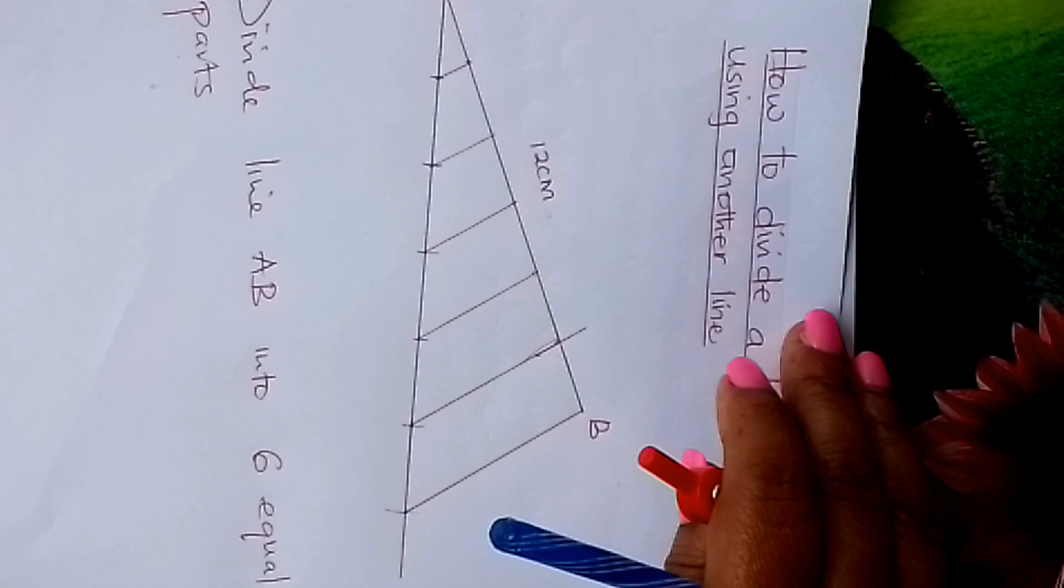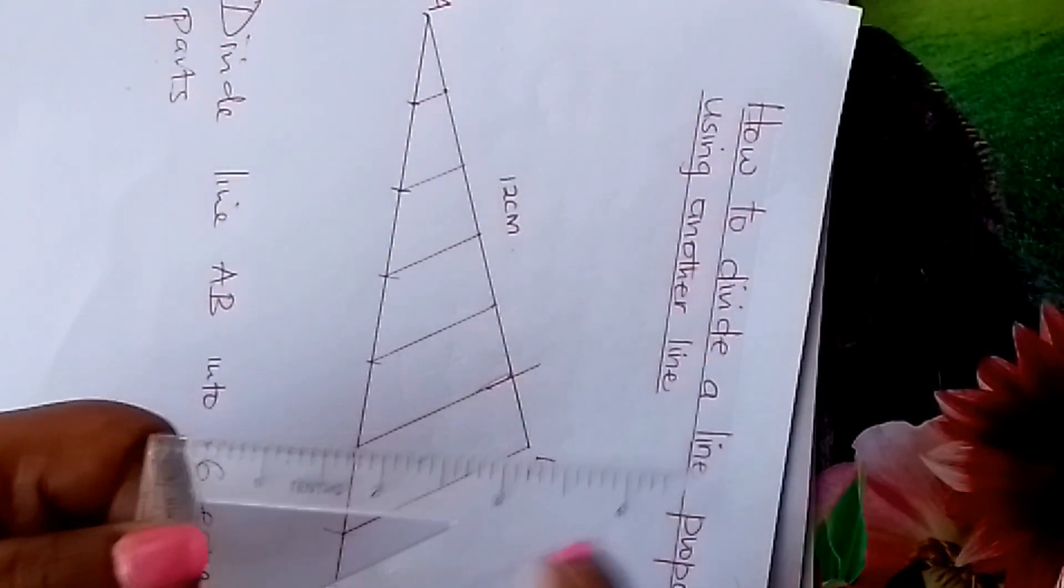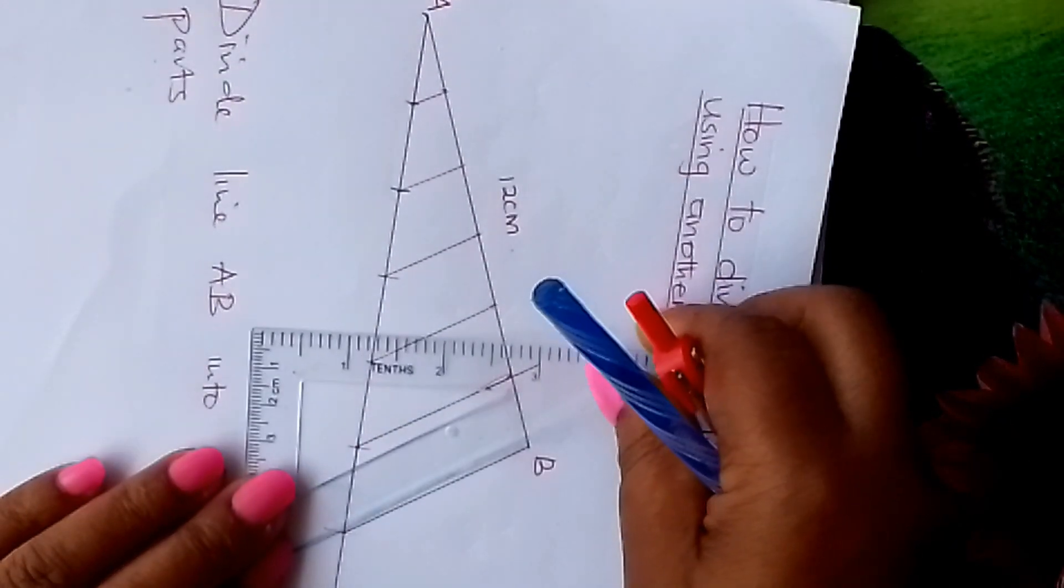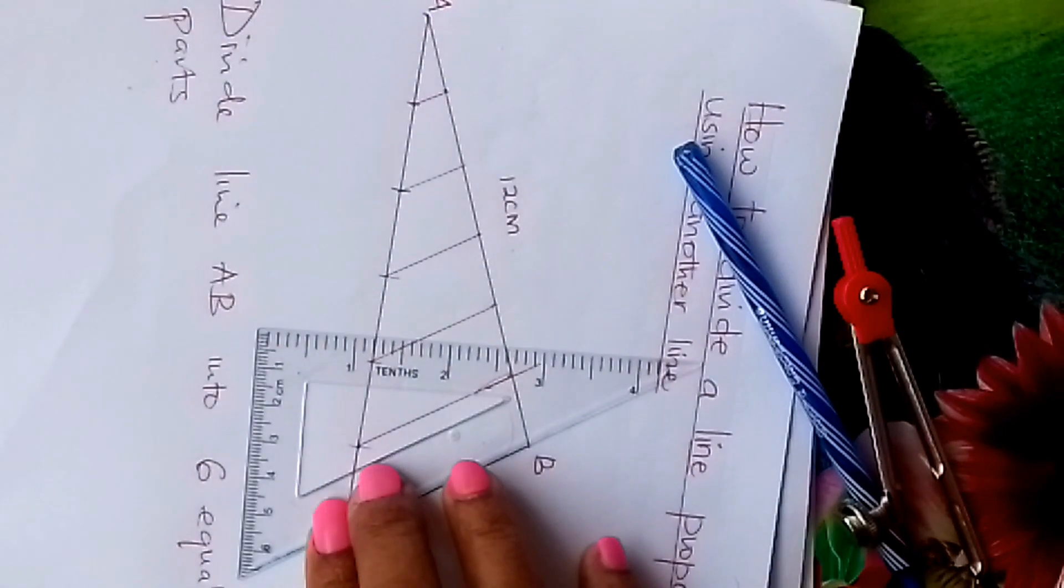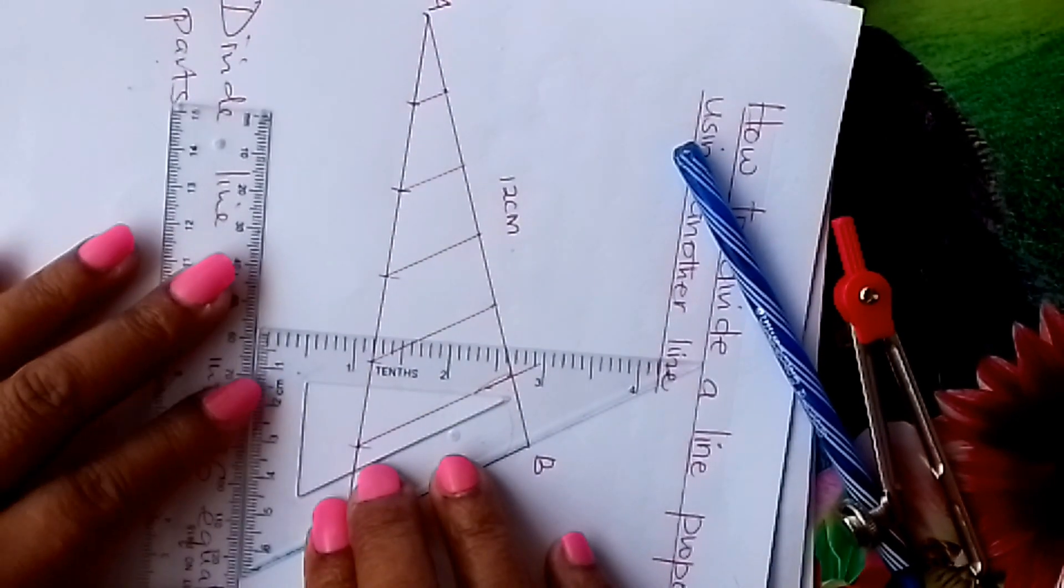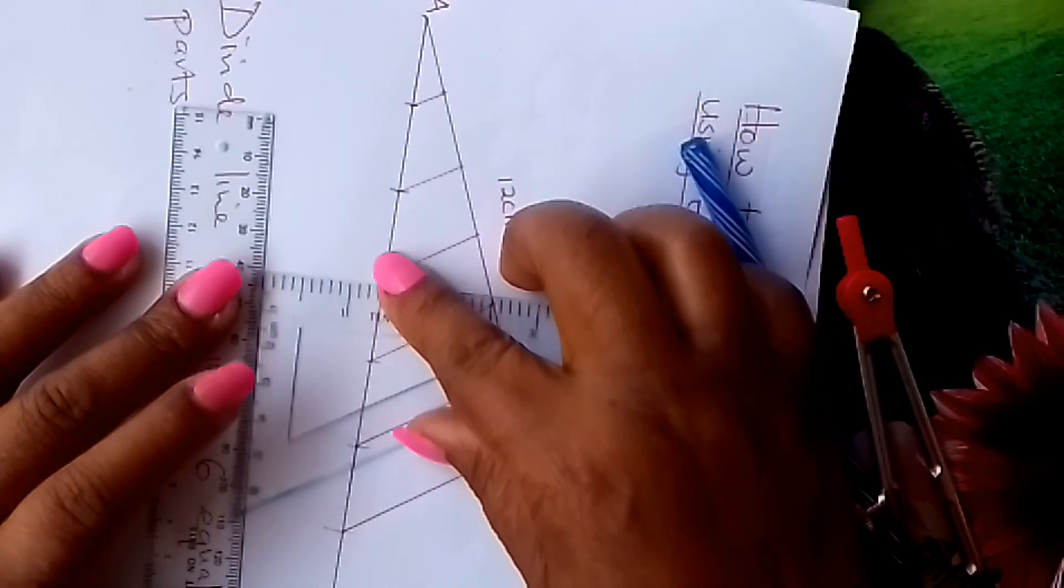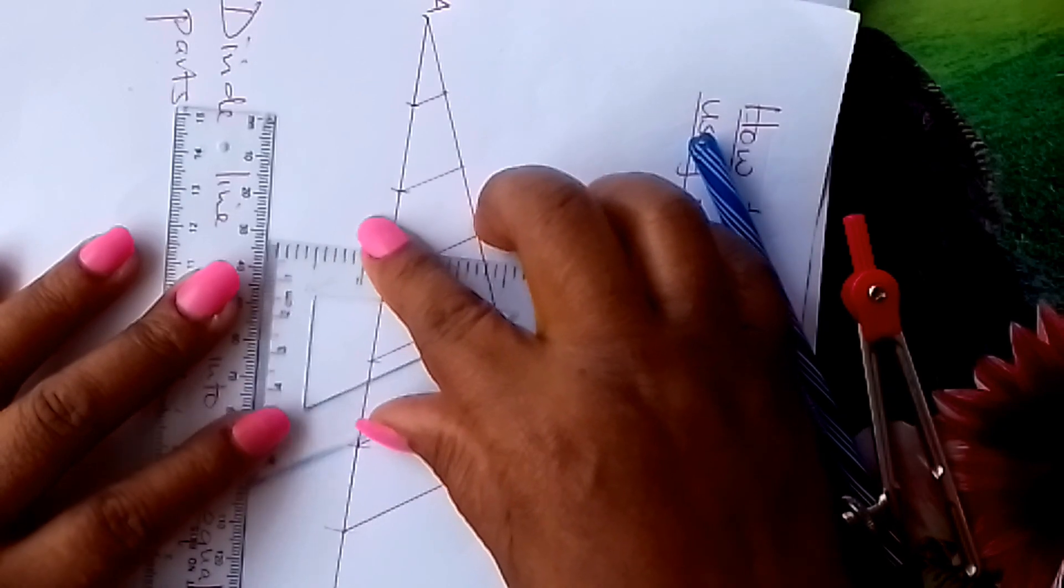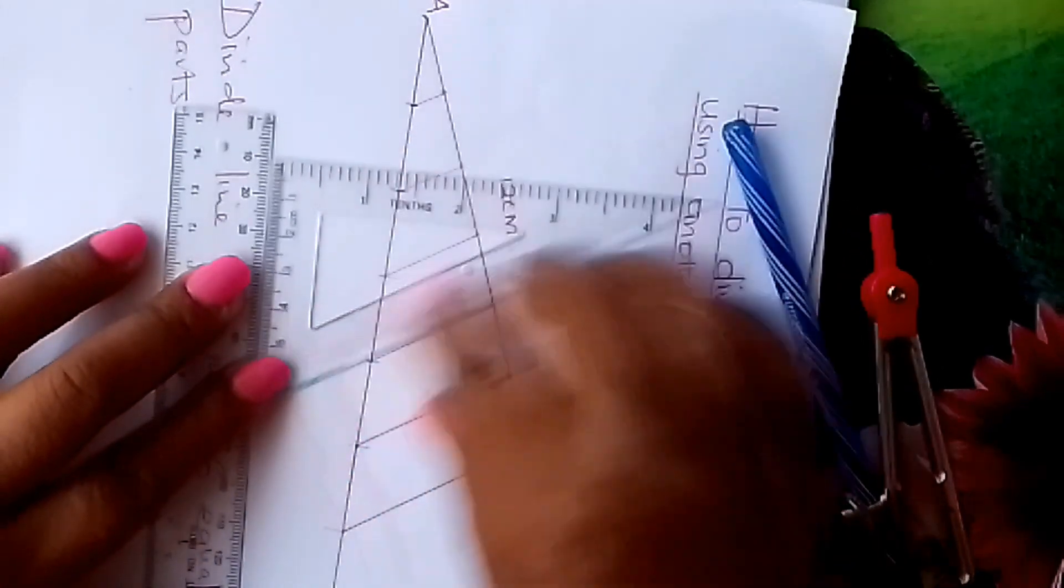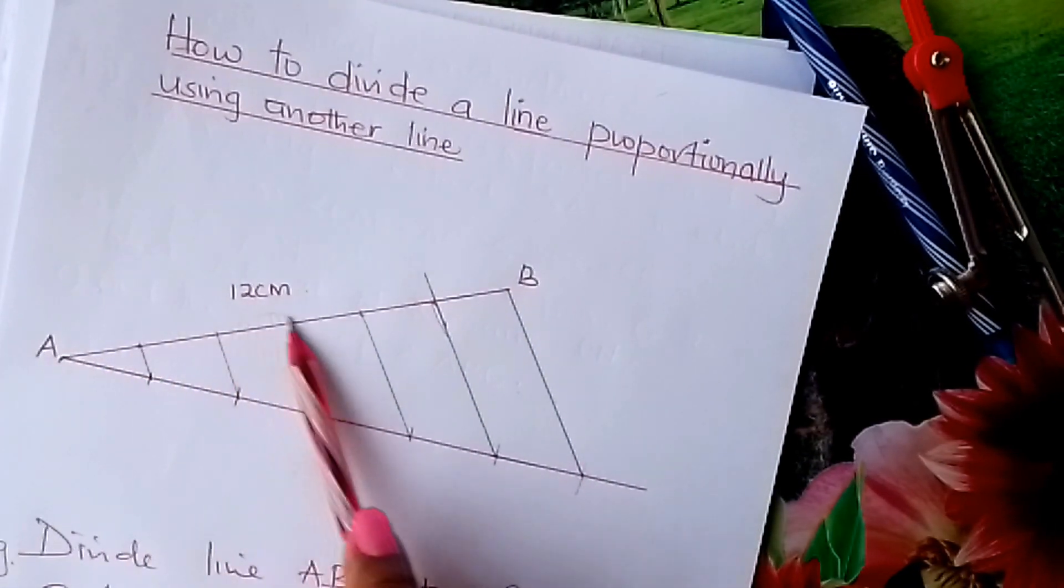Come with your set square. I'm just repeating for you to go and practice. The longer side of the set square, fix it on this first line here so that you are able now to draw parallel lines through those markings that you had put. So, you slide, sliding accurately, draw, slide accurately. You end up dividing your line into the number of parts that you wanted.